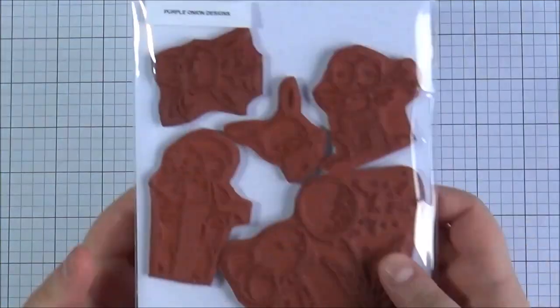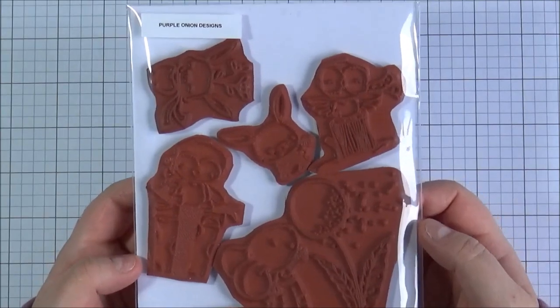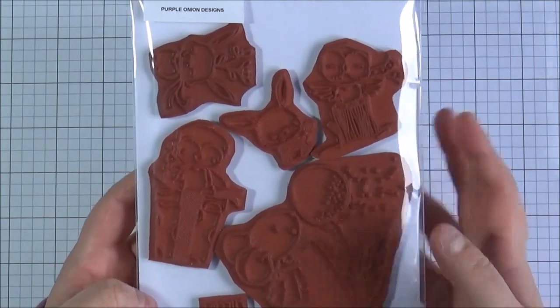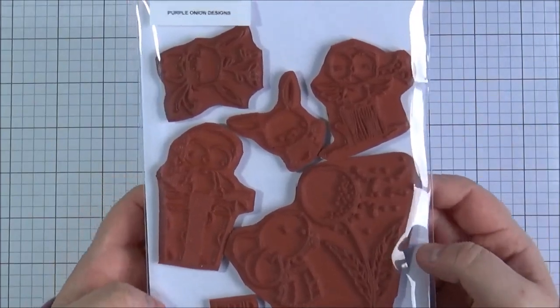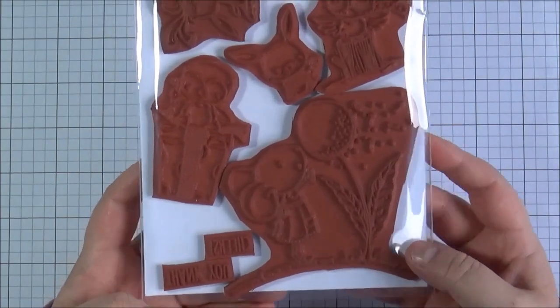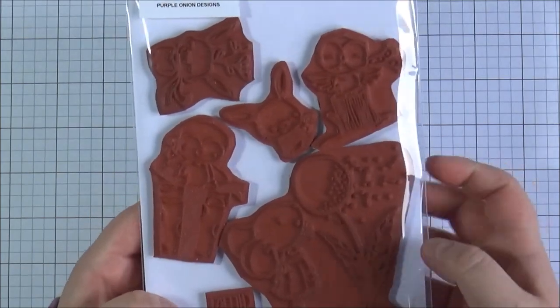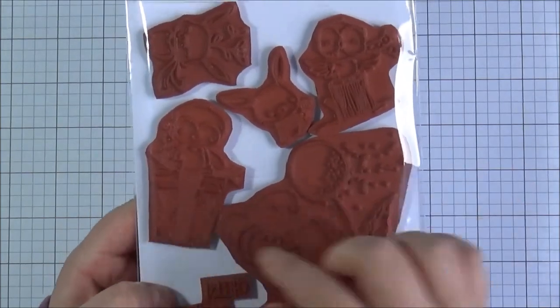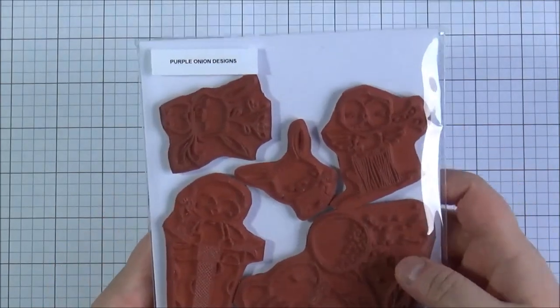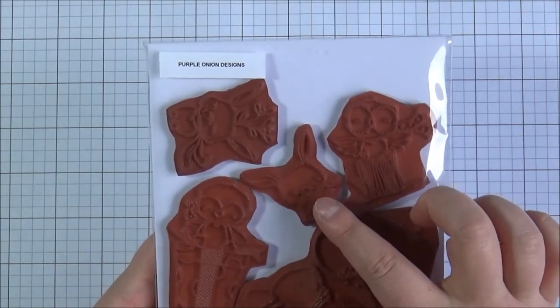Next up I made an order from Purple Onion Designs. I have to say I've wanted some stamps for ages from there and for some reason I just didn't end up ordering them. But I finally made an order. I've got a few of these little critters here. The little penguin. Probably a little bit difficult to see on camera but you've got the penguin. A little mouse with a flower. A little rabbit I think.